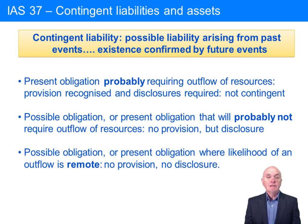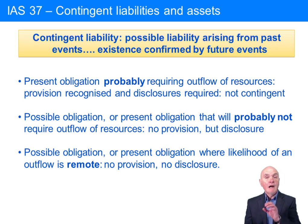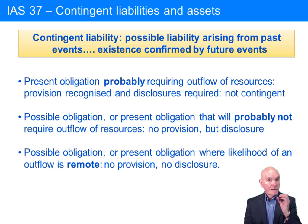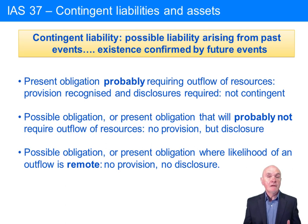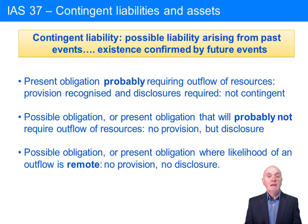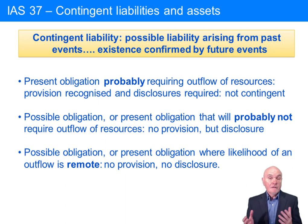A contingent liability is a possible liability arising from past events. So this is not events after the reporting date — events have already occurred. But we don't know what the liability will be, how likely it is to be paid, or how much it's going to be, until it is confirmed by future events. So we don't know whether in fact there's a liability at all.